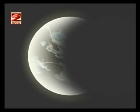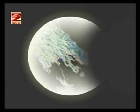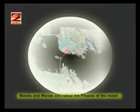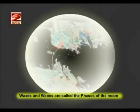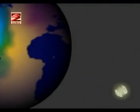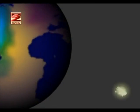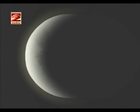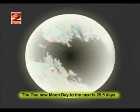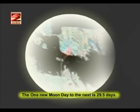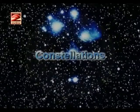From new moon day the moon waxes, that means it appears bigger and bigger again every day. These different sizes of the moon that we see as it waxes and wanes are called the phases of the moon. Due to rotation and revolution of the Earth and the moon, we see the phases of the waxing moon serially till full moon day. The period from one new moon day to the next is 29.5 days.